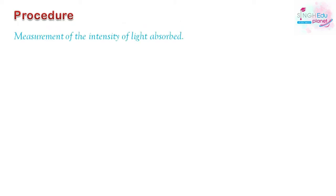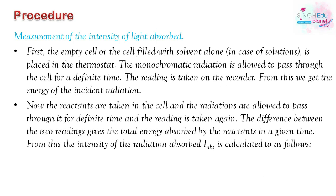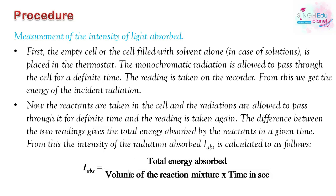The procedure to measure the intensity of light absorbed is as follows: First, place an empty cell or solvent in the thermostat and pass monochromatic radiation, recording the reading as the incident radiation energy. Then place the reaction mixture and take the reading again. The difference between the two readings gives the total energy absorbed by the reactants, from which the intensity of absorbed radiation is calculated as total energy absorbed divided by total volume of reaction multiplied by time in seconds.